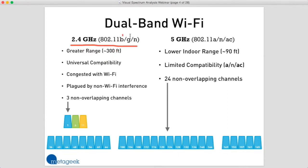If you see 802.11b, g, and n, then you know that's probably a 2.4 gigahertz compatible device. The 2.4 gigahertz wavelength is longer than the 5 gigahertz wavelength, so it has a greater range. 2.4 gigahertz will go about 300 feet.